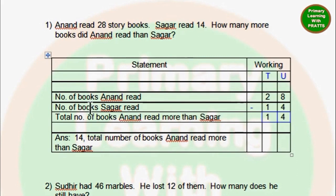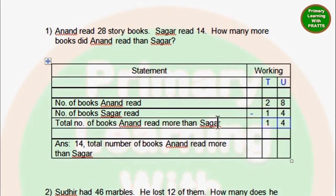So the first statement will be: number of books Anand read, which is 28. Number of books Sagar read, which is 14. This is already given to us. You will put T and U in blue pencil. You will put your minus sign in blue pencil. Next: total number of books Anand read more than Sagar, because this is the question that is asked from us. So we can find all three statements here.